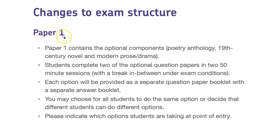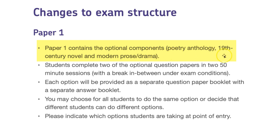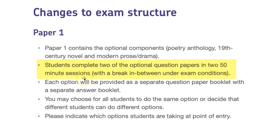Paper 1 — those options of Part A, Part B and Part C — contains the optional components: Poetry Anthology, 19th Century Novel, and Modern Prose or Drama. You only have to do two of those in two 50-minute sessions.